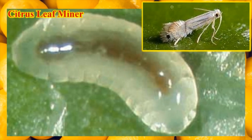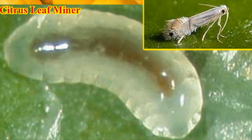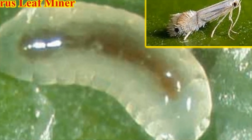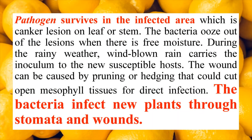This is the citrus leaf miner insect and its larva. The larva carries the bacterium from infected plants to uninfected or healthy plants. The pathogen survives in infected areas which are the canker lesions. The bacteria move in the form of a liquid from the infected plant and are carried to the healthy plant, infecting new plants through stomata and wounds.